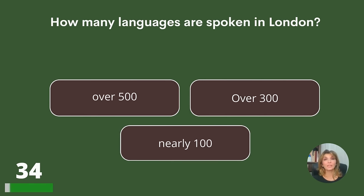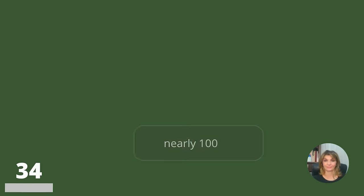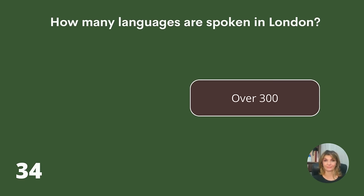How many languages are spoken in London? Over 500, over 300, or nearly 100? Answer: Over 300.